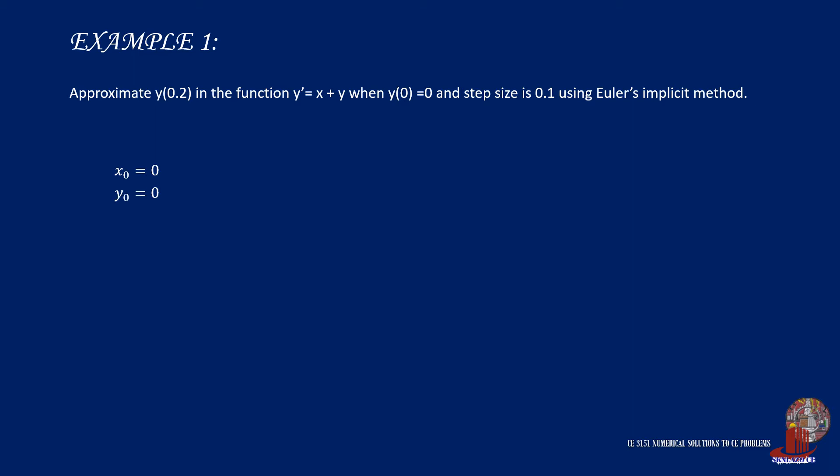x0 = 0 and y0 = 0. The step size h = 0.1. So from the formula for y1 given as y0 + h times the function of x1 and y1, we need to integrate the original function, which is x + y.